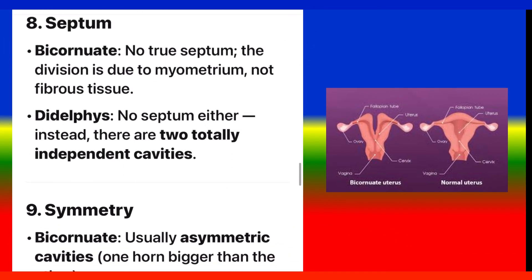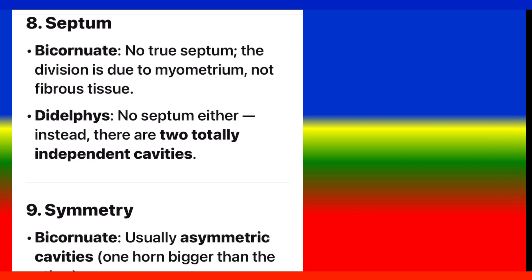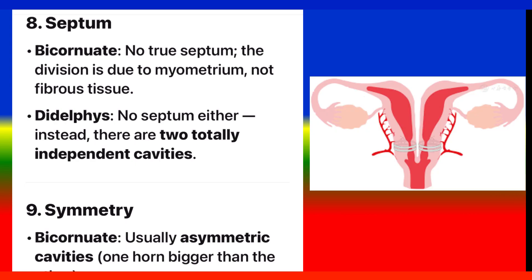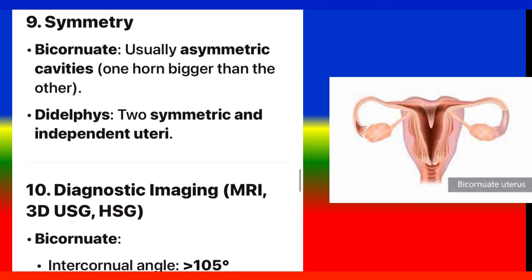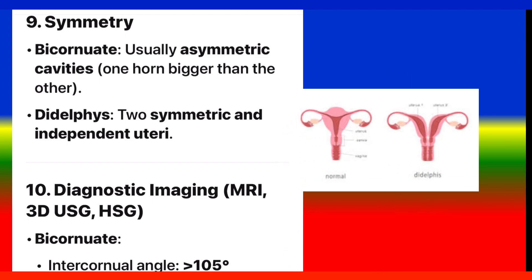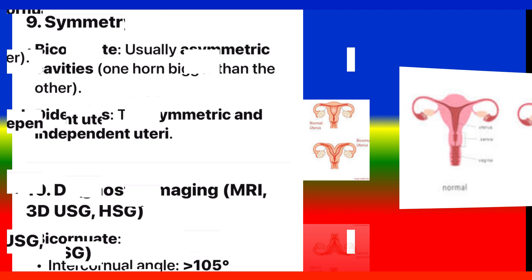Point 8: Septum. Bicornuate: no true septum — the division is due to myometrium, not fibrous tissue. Didelphys: no septum either; instead there are two totally independent cavities. Point 9: Symmetry. Bicornuate: usually asymmetric cavities, one horn bigger than the other. Didelphys: two symmetric and independent uteri.